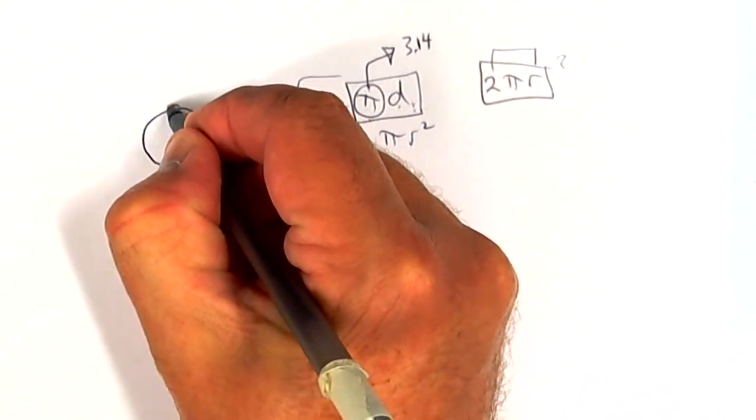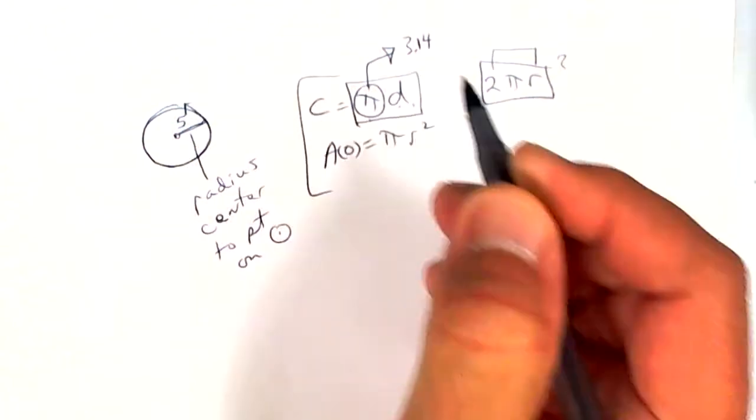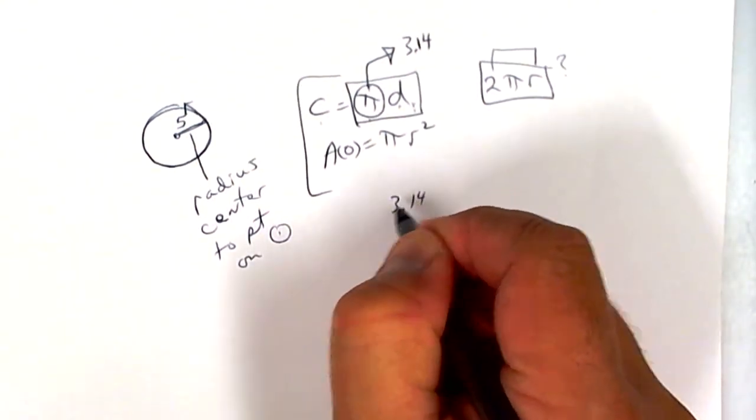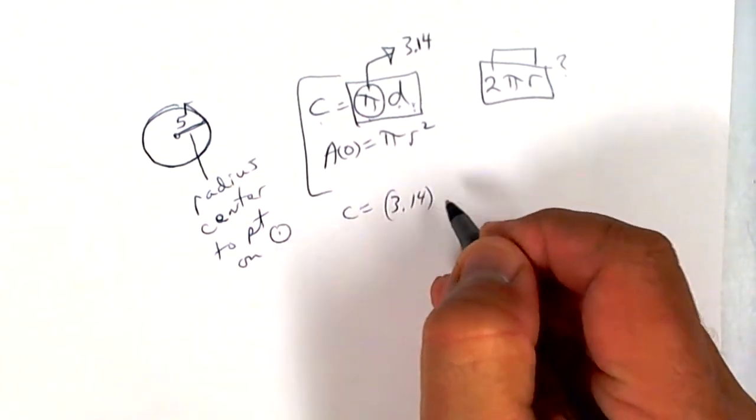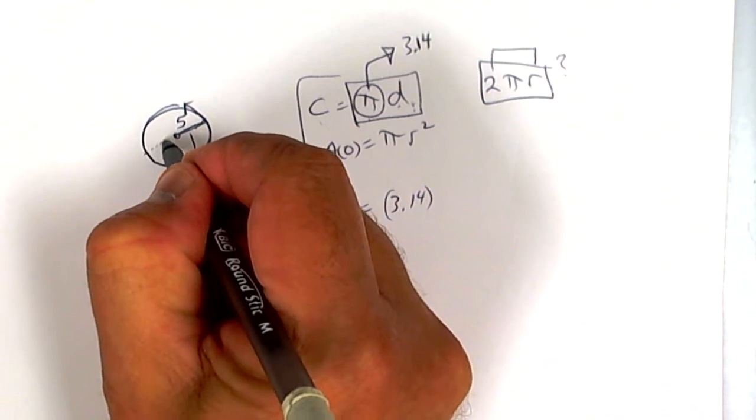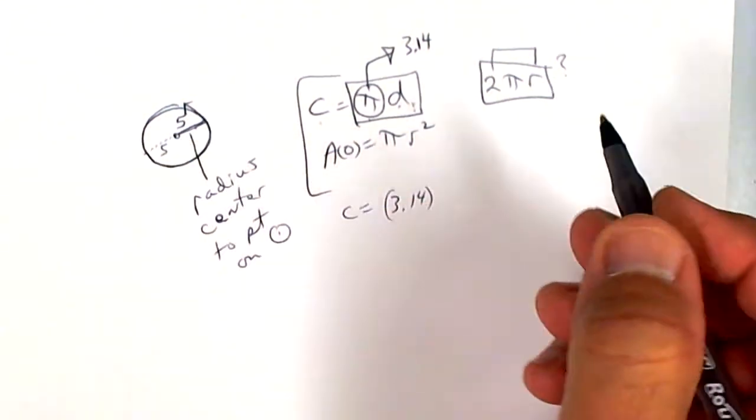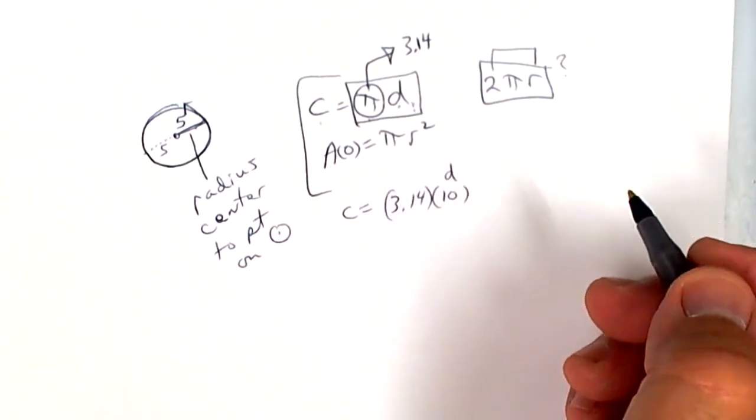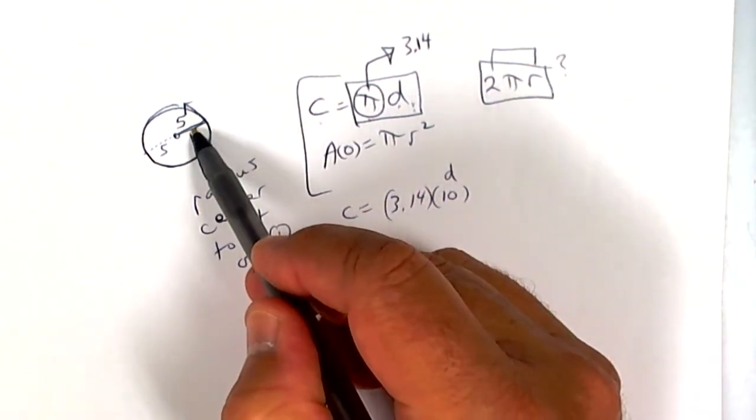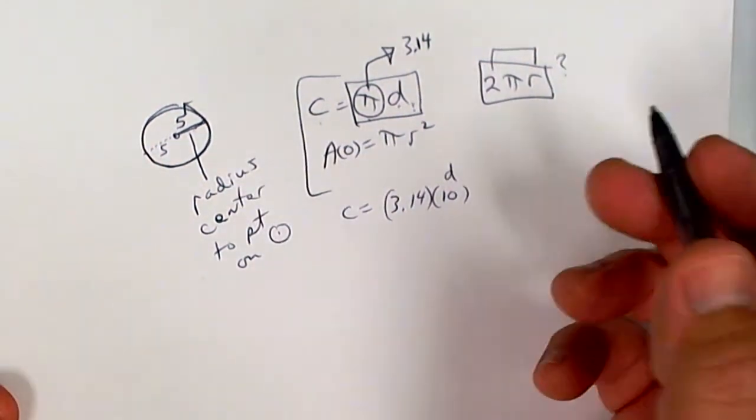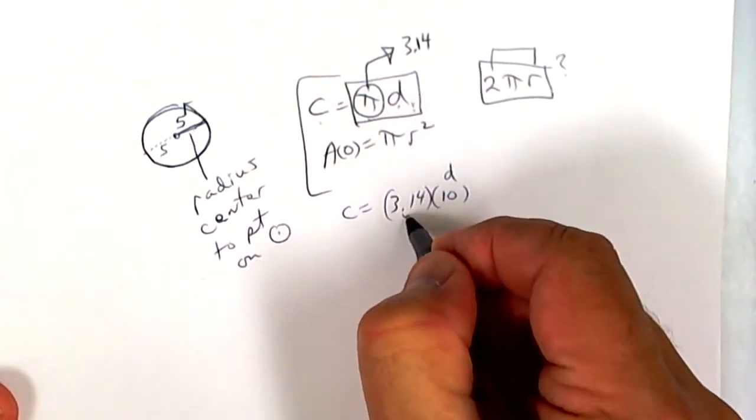To find circumference, like if you want to walk around this one time, it would be pi, 3.14, times diameter. Well, this is the radius, so the diameter would be two of those: 5 plus 5 equals 10. Put a 10 there because that's your diameter. Radius is half of it, and the diameter is the whole thing. It takes two of those.